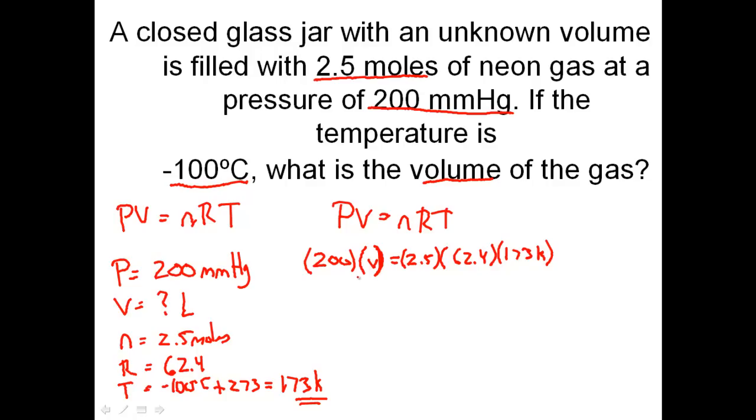We're going to isolate the volume. We take the 200 over and divide this side by 200. Let's calculate the volume. It's 2.5 times 62.4 times 173 divided by 200. We end up with 135 liters of gas.